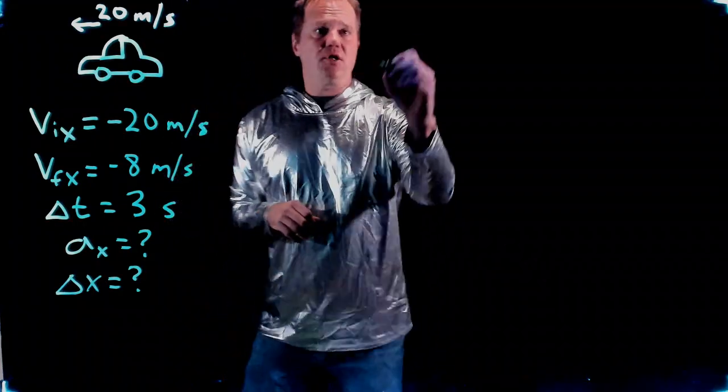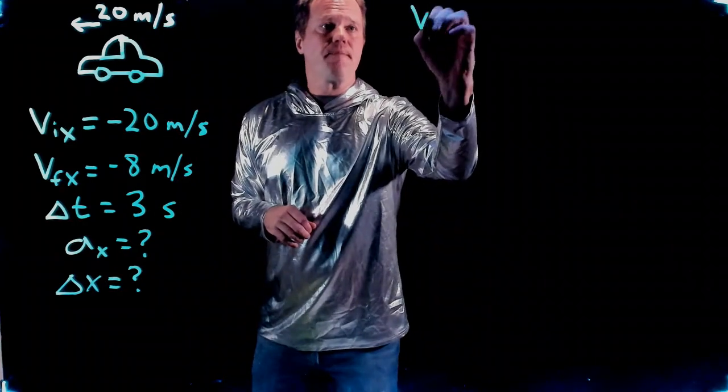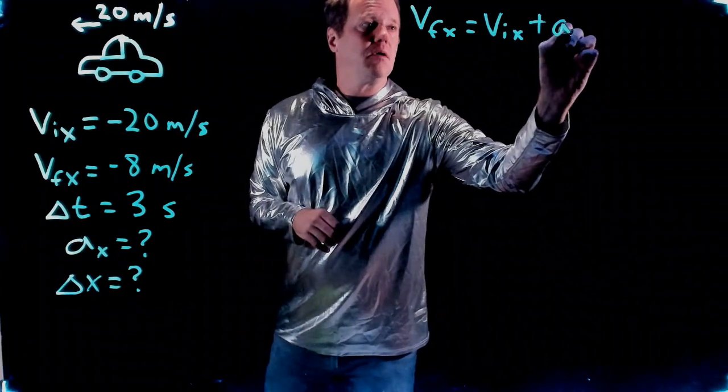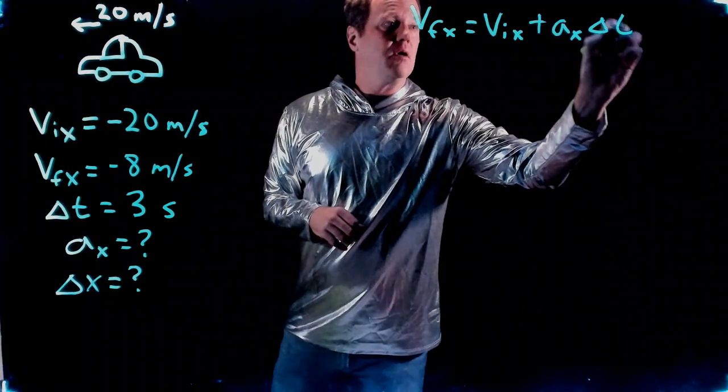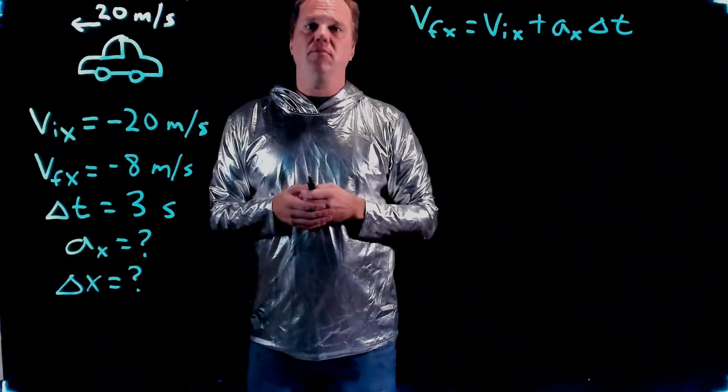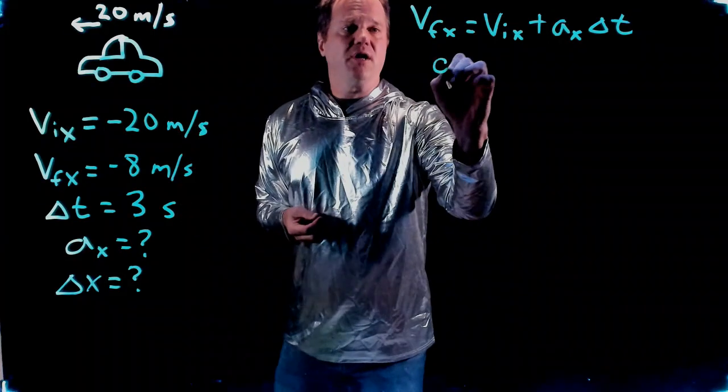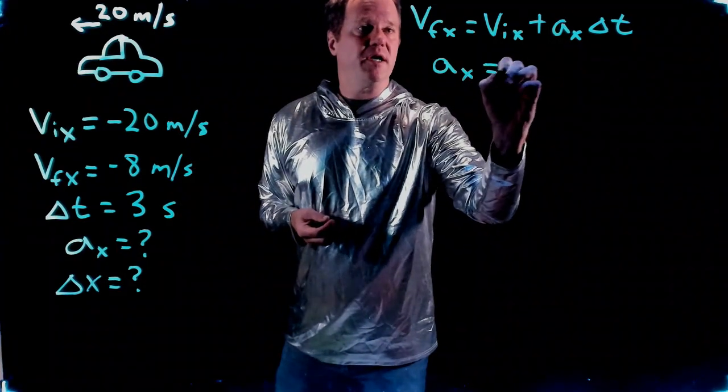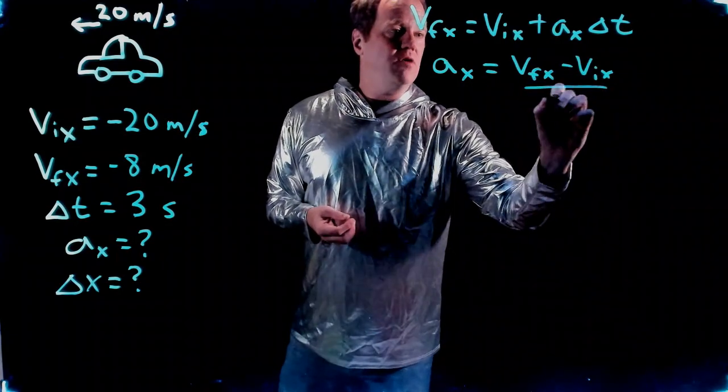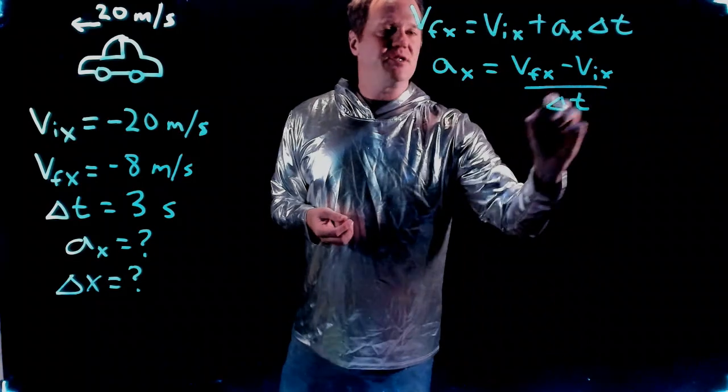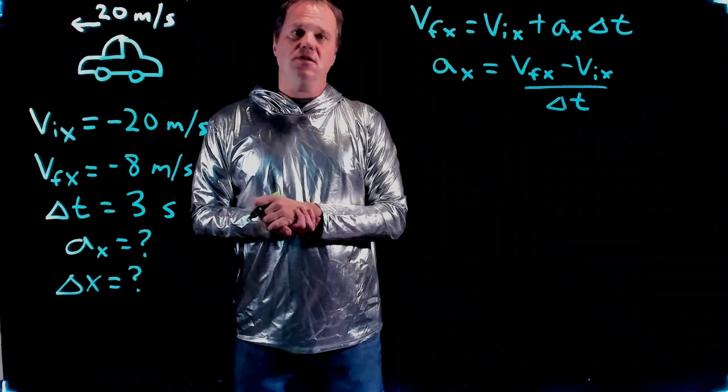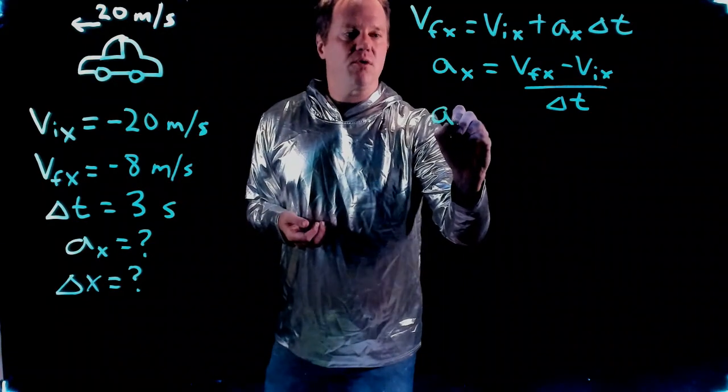I would use this equation: V_fx = V_ix + a_x times delta t. I know everything except the acceleration, so it's one equation, one unknown. Once you do the algebra, a_x = (V_fx - V_ix) / delta t. You might recognize this as the definition of acceleration: change in velocity over change in time.